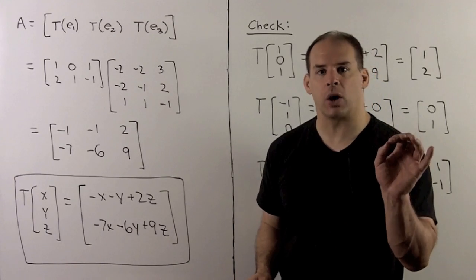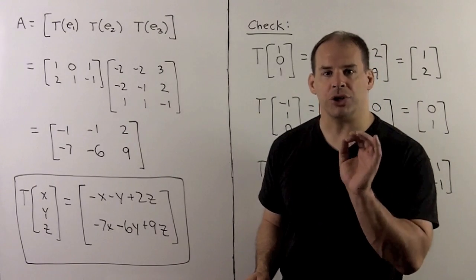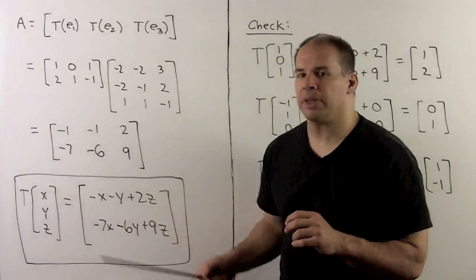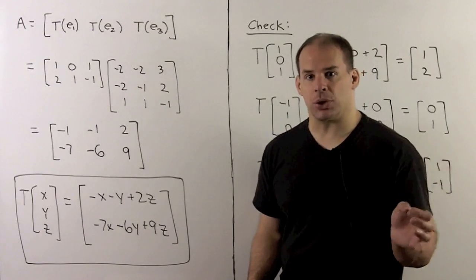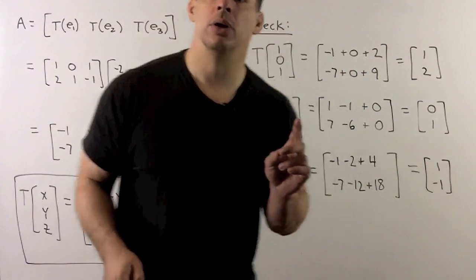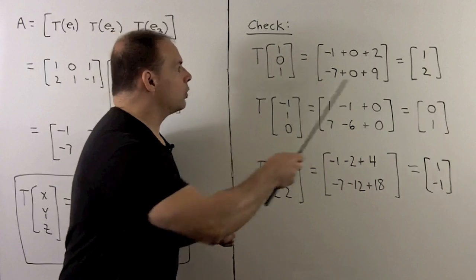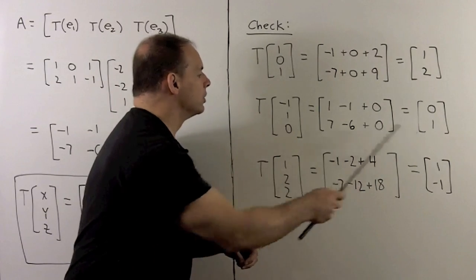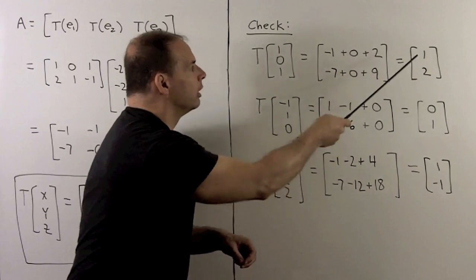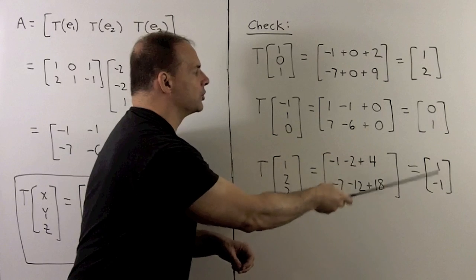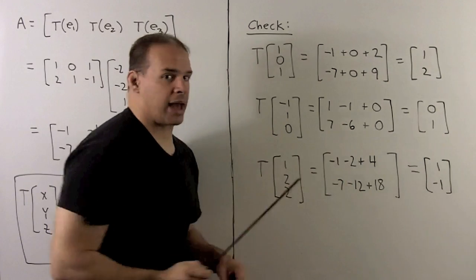Of course, we check our work. We'll take our original vectors, put them into T, and verify that our assumptions hold. That gives us the following three equations. When we do the work, we know the vectors in R2 come out as expected.